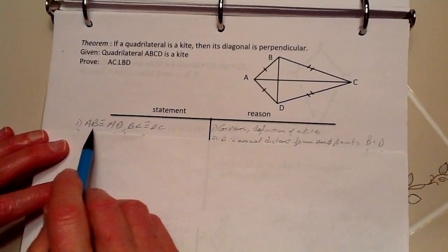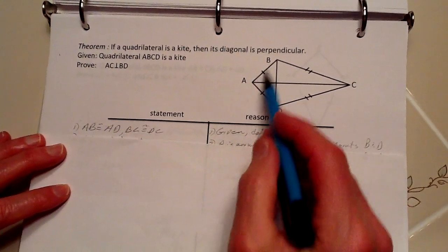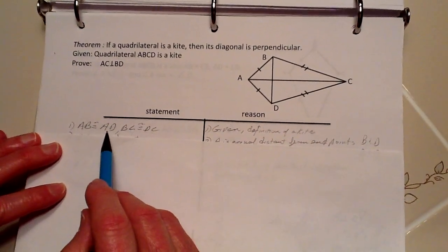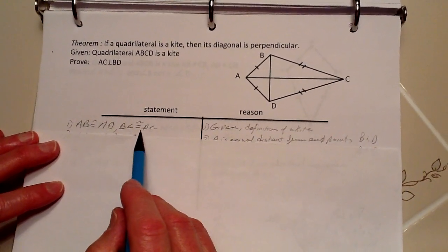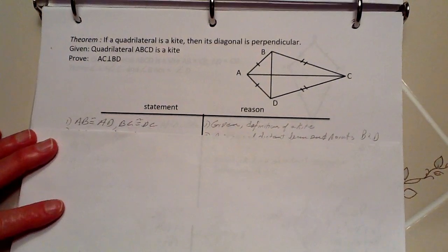And now we just restate, as I just said, that AB is congruent to AD and BC is congruent to DC, and that's all part of the definition of a kite.